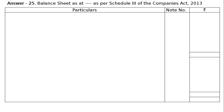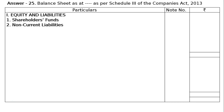First, we will be writing Equities and Liabilities. There is no equity. Under shareholders' funds — there are none. Under non-current liabilities, we will have long-term borrowings.